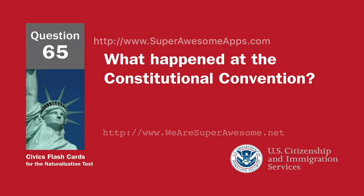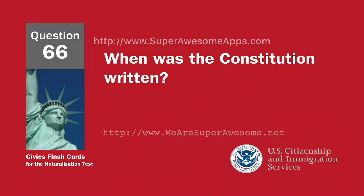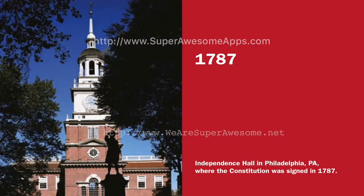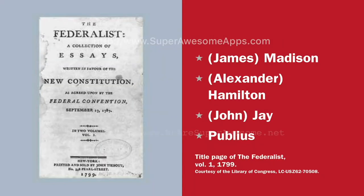What happened at the Constitutional Convention? The Constitution was written. The Founding Fathers wrote the Constitution. When was the Constitution written? 1787. The Federalist Papers supported the passage of the U.S. Constitution. Name one of the writers. James Madison. Alexander Hamilton. John Jay. Publius.